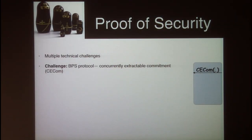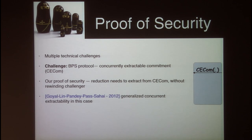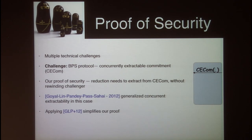A noteworthy point is that one challenge in our proof of security is that in the BPS protocol, at some stage, the verifier needs to send a concurrently extractable commitment to some value. Our proof of security would require a reduction to extract from this concurrently extractable commitment while not rewinding an external challenger. In a recent work, Goya, Lin, Pandey, Paas, and Sahai presented a technique to perform such concurrent extraction. By applying this generalized concurrent extraction of commitment schemes, our proof is simplified by a huge extent. For more technical difficulties, I encourage you to look at our paper.